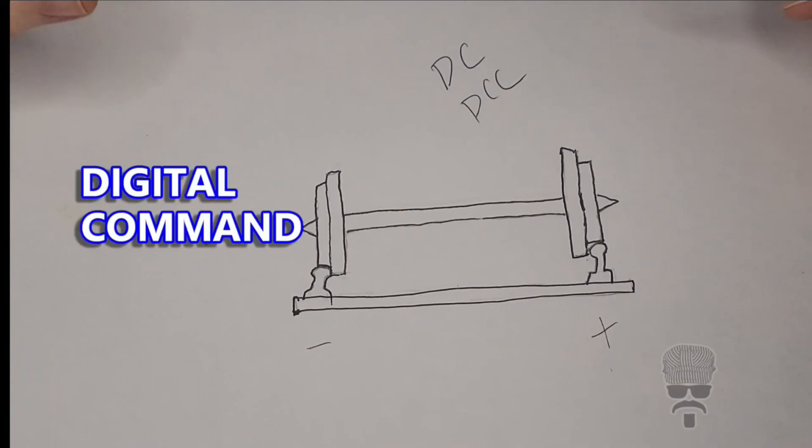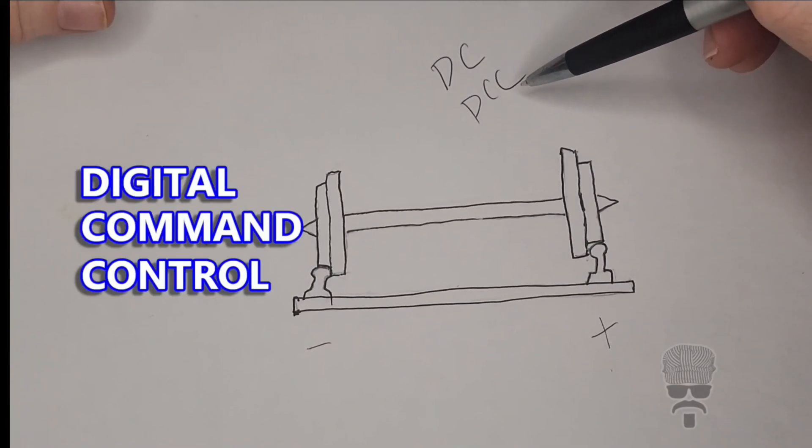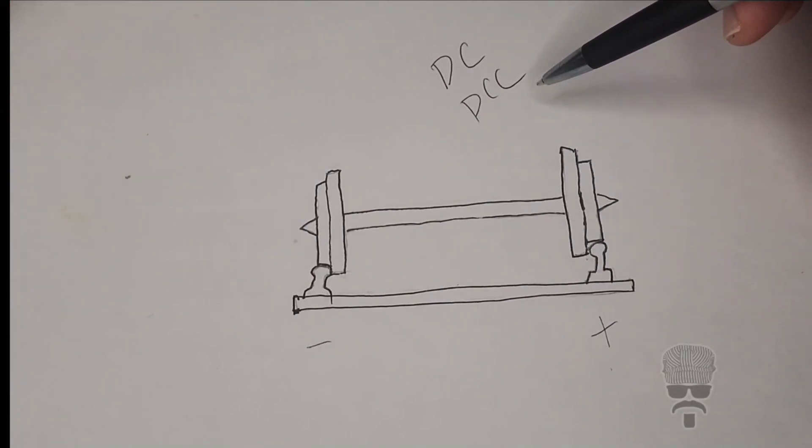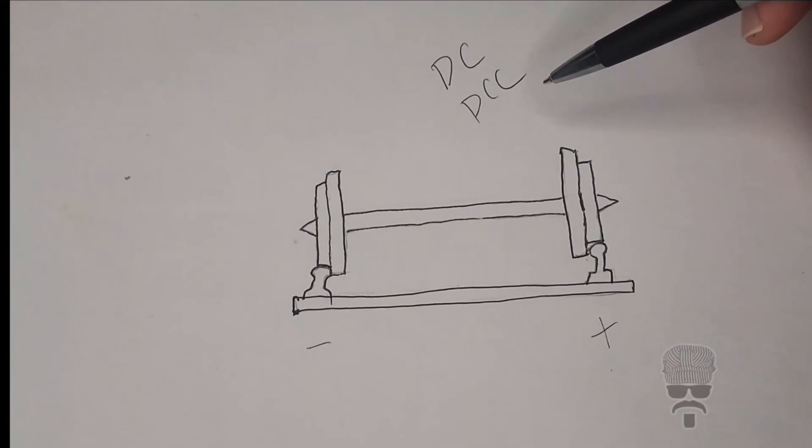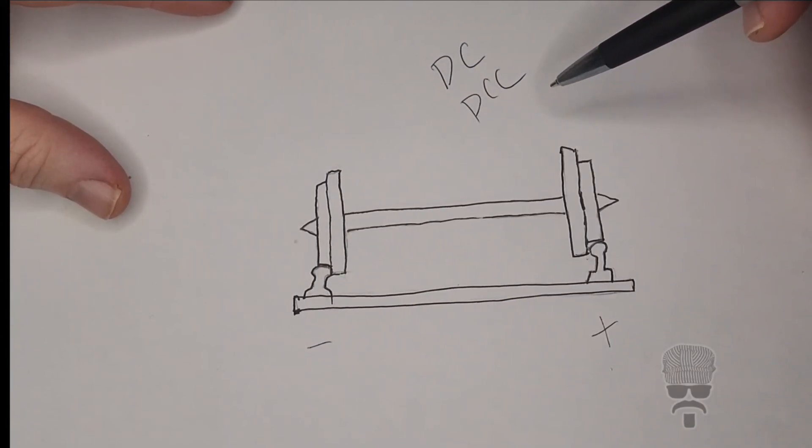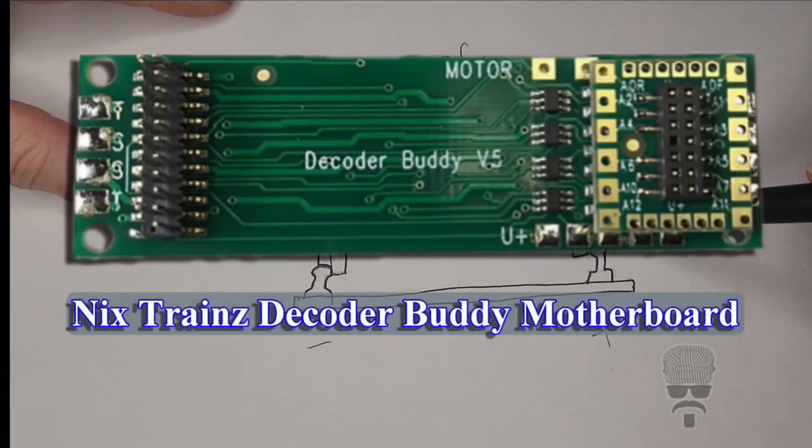DCC or digital command and control also runs on DC power, but is a lot more advanced. DCC runs power to the track just like DC. The difference is DCC can also send command codes through the track. These command codes feed information to each individual locomotive through a decoder mounted in the locomotive itself.